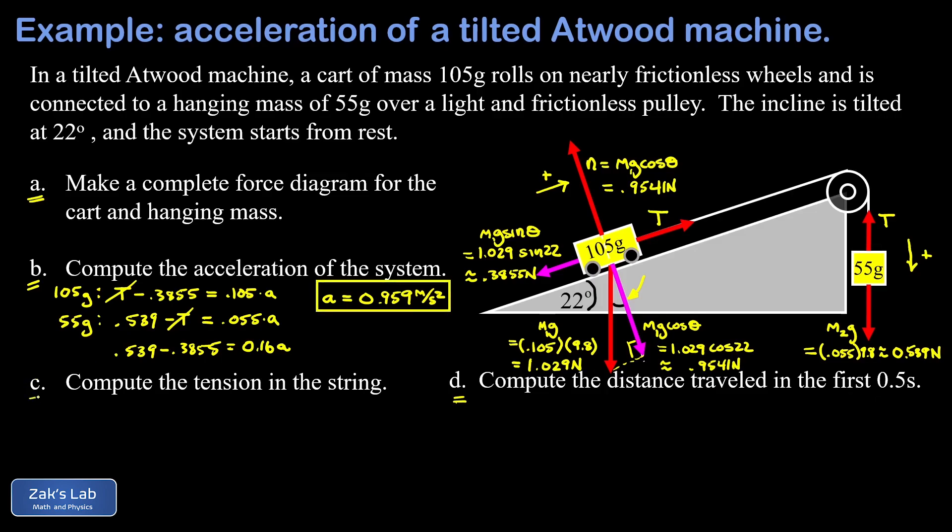In part c we're asked to get the tension in the string, and we have a choice. We can go back to either one of the original equations that we wrote down using Newton's second law and plug in a and solve for T. The top one is slightly easier because I can quickly solve for the tension by adding 0.3855 to both sides. So T is 0.3855 plus 0.105 times a, which is 0.959 meters per second squared. When we run the numbers on this we get a tension of 0.486 newtons.